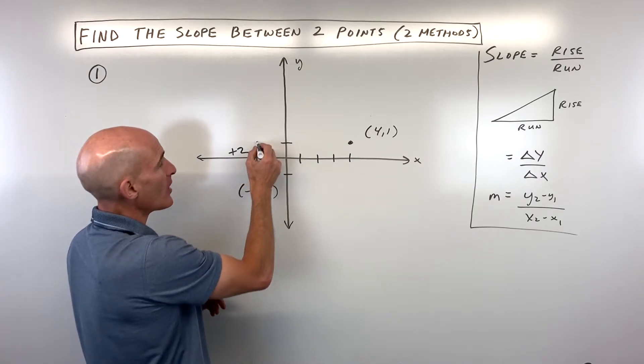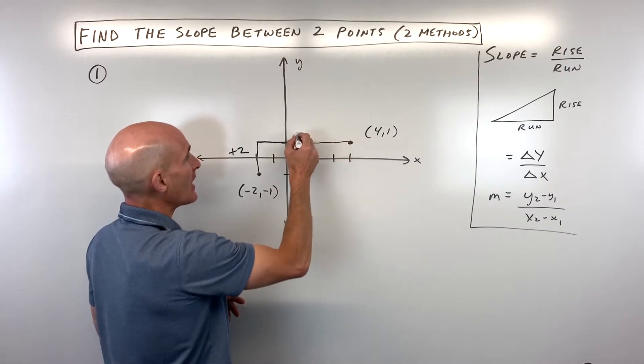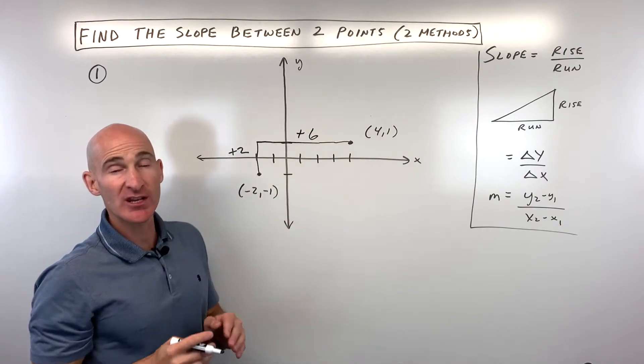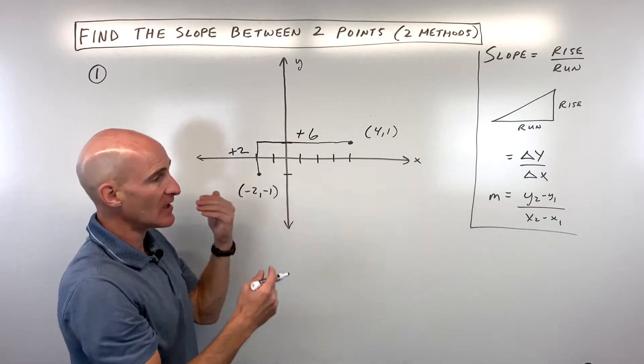Then I'm going to go right 1, 2, 3, 4, 5, 6, and when I go to the right that's positive. If I was to go to the left that's negative. Just like a number line: up positive, down negative, right positive, left negative.